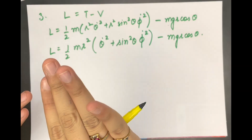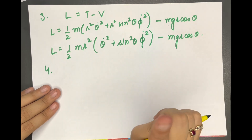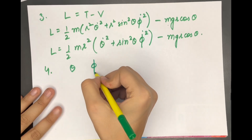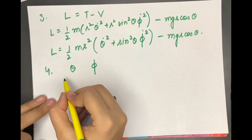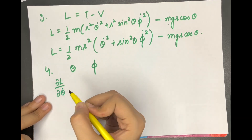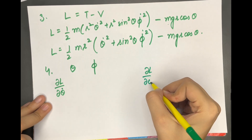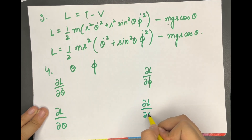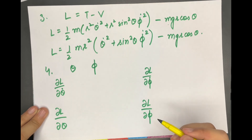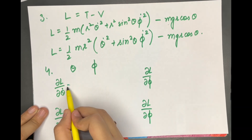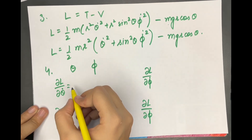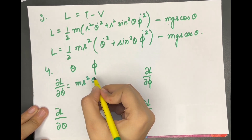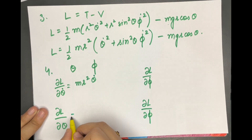Our fourth step is to calculate the quantities in the Euler-Lagrange equation. Here we have a change: in the previous two examples there was only one generalized coordinate, but here we have both θ and φ. So we need to calculate ∂L/∂θ̇, ∂L/∂φ̇, ∂L/∂θ, and ∂L/∂φ. There will be two equations of motion. ∂L/∂θ̇ = mr² θ̇.